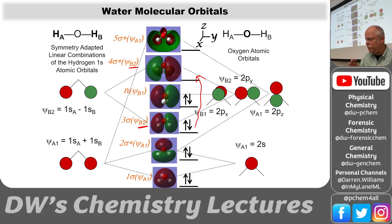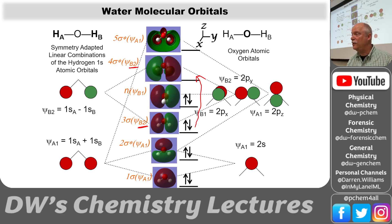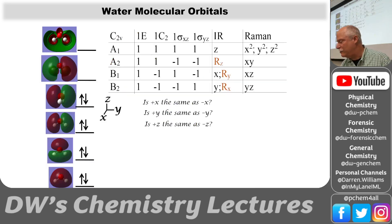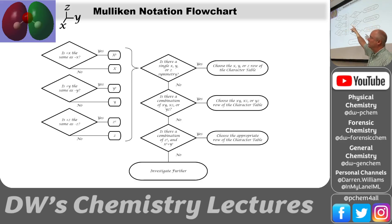Let's practice determining what these symmetries are. I've made a Mulliken notation flow chart. We start with some yes/no questions. Standing at the origin of the molecule, I look along each axis: I look up the Z-axis and see green on the left and red on the right; I look down and still see green on the left and red on the right — it hasn't changed. So positive Z and negative Z look the same, giving Z-squared symmetry.